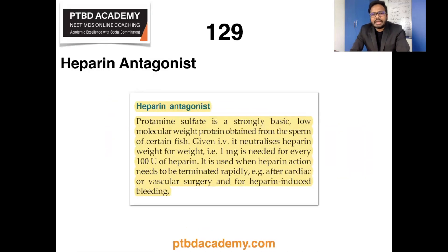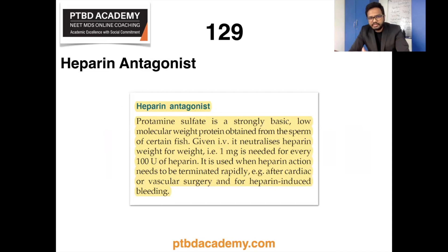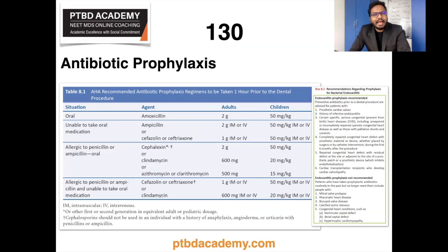Moving on, heparin antagonist — protamine sulfate is a strongly basic, low molecular weight protein obtained from the sperm of certain fish. It is given IV and neutralizes heparin weight-to-weight: 1 mg is needed for every 100 units of heparin. It is used when heparin action needs to be terminated rapidly, such as after cardiovascular surgeries or for heparin-induced bleeding.